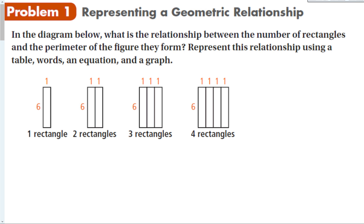For the first problem, the diagram below asks: what is the relationship between the number of rectangles and the perimeter of the figure they form? We need to represent this relationship using a table, words, an equation, and a graph. Let's go through how we would represent all of these.